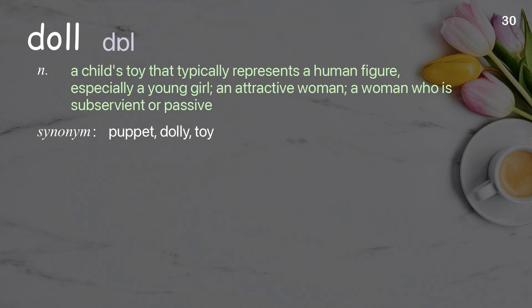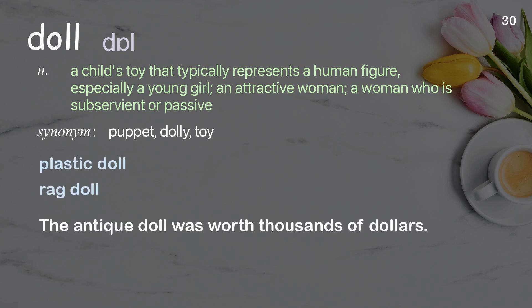Doll: a child's toy that typically represents a human figure, especially a young girl; an attractive woman; a woman who is subservient or passive. Examples: plastic doll, rag doll. The antique doll was worth thousands of dollars.